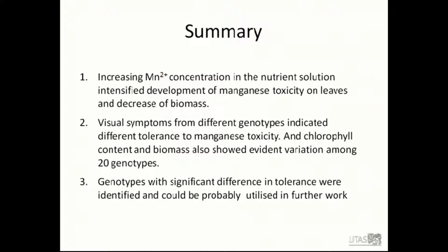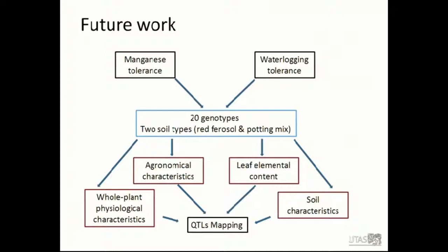In summary, increasing manganese concentration in nutrient solution intensifies development of manganese toxicity and leads to decreased biomass. Visual symptoms from different genotypes indicate different tolerance to manganese toxicity. Chlorophyll content and biomass also show evident variation among the 20 genotypes. Finally, genotypes with significant differences in tolerance were identified and could probably be used in future works. My future works will combine manganese tolerance and waterlogging tolerance, and the same 20 genotypes will be grown, collecting four different kinds of traits to be applied in QTL mapping.